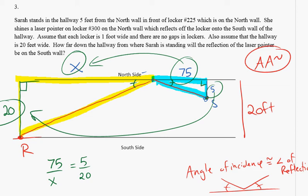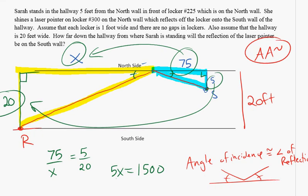Using the means-extremes product theorem, we know that 5 times X, which is 5X, equals 75 times 20, which is 1,500. Solving for X, we divide each side by 5, and X equals 300.